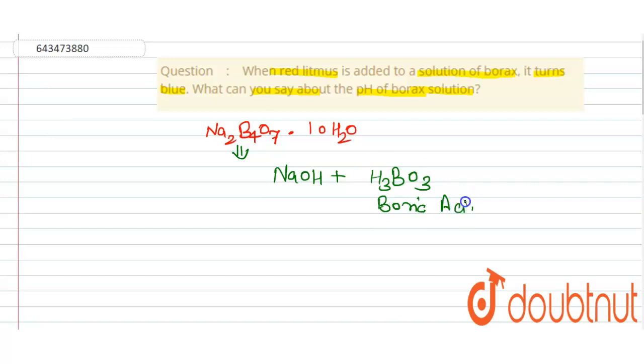NaOH is sodium hydroxide, which is a strong base, and H3BO3 is boric acid, which is a weak acid.